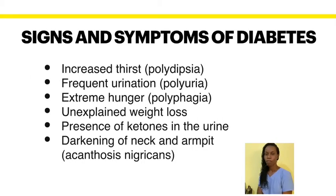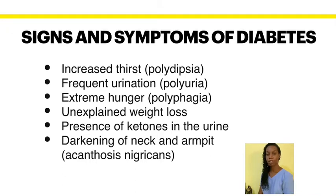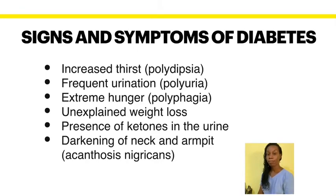Signs and symptoms of diabetes — there are many. We have increased thirst (polydipsia), frequent urination (polyuria), extreme hunger (polyphagia), slow healing sores, blurred vision, and unexplained weight loss. If you're in need of this slide, comment below and I'll send it to your email address.